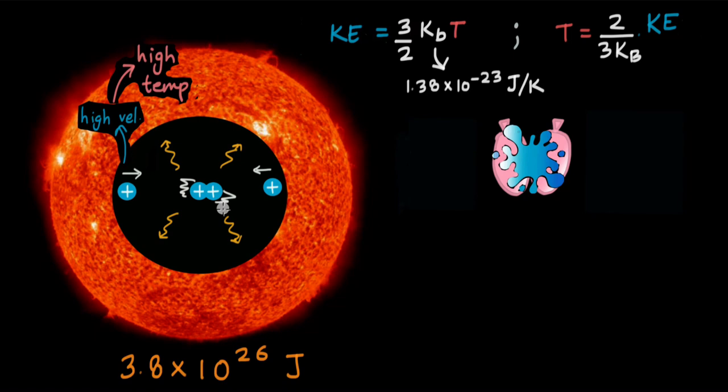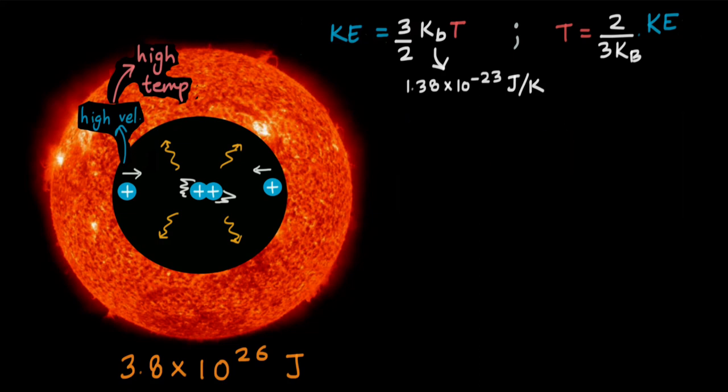Alright. Naturally, if protons are just left to themselves, they would never want to approach each other. But when they are made to approach each other, because of high velocity, their potential energy must increase. So kinetic energy is being transformed into the potential energy of the two protons.